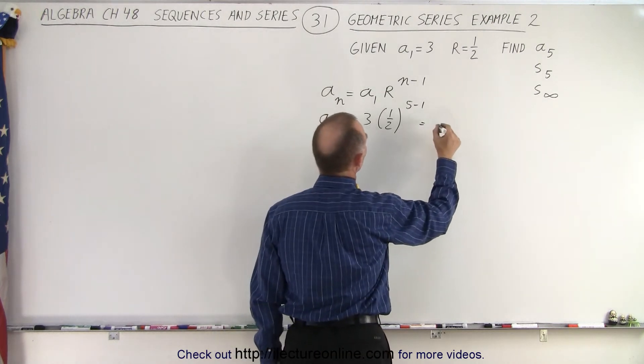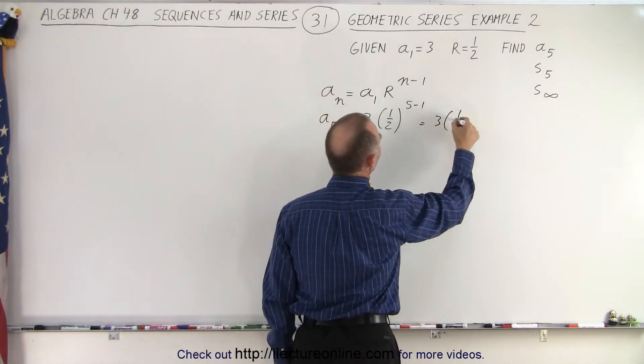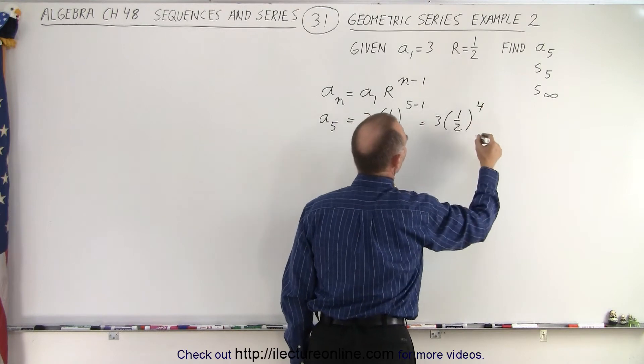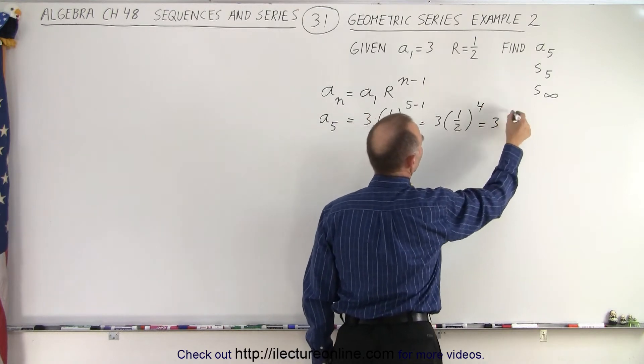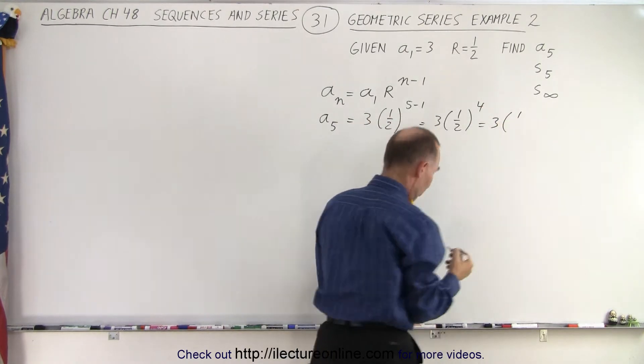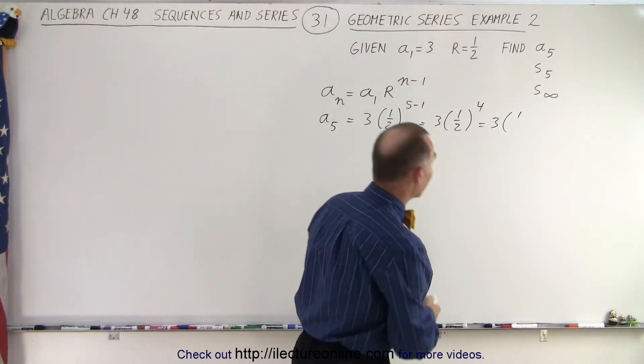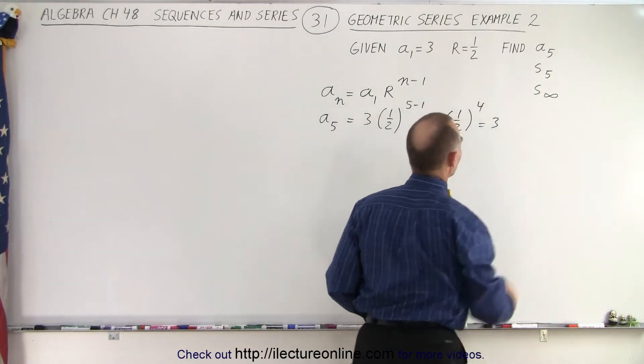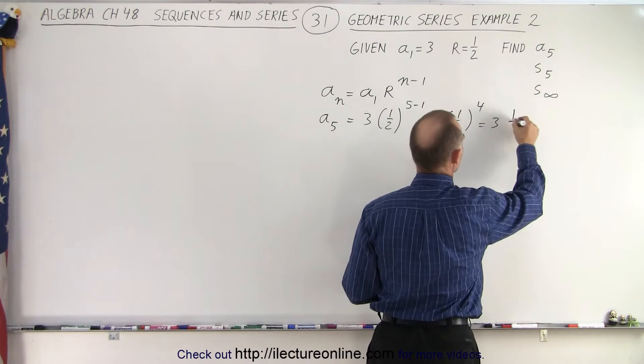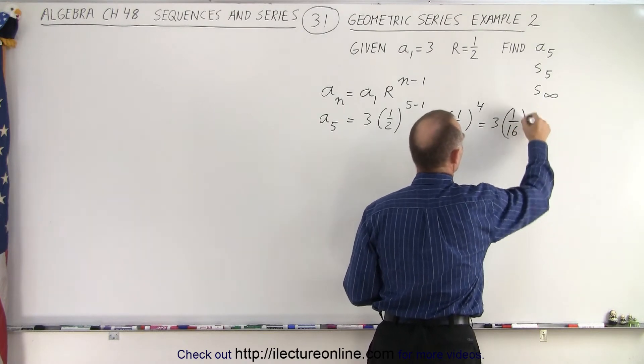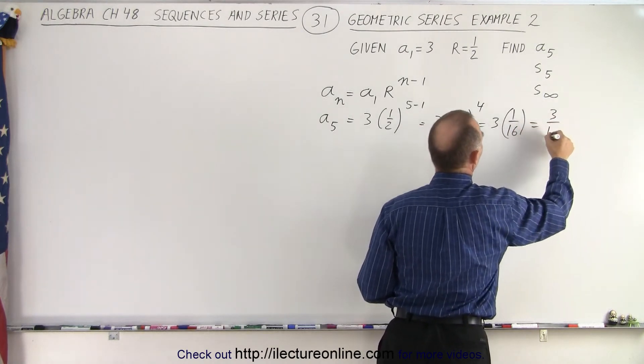Okay, so this is equal to 3 times 1 half to the 4th power, which is equal to 3 times 1 half. Well, let's see. We can take the 4th power of 1 half. That would be 1 over 16. And so this is equal to 3 divided by 16.